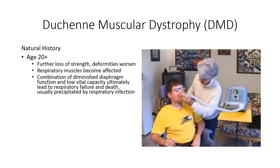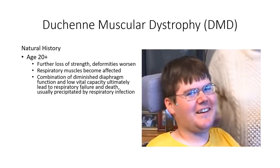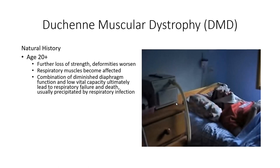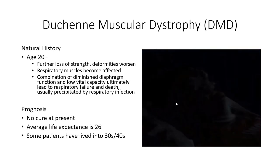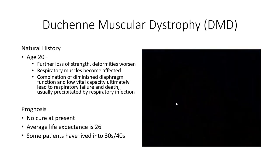Core musculature becomes increasingly affected in late adolescence, including muscles of respiration. Respiratory therapists assist with the clearing of phlegm from the respiratory tract, as coughing becomes increasingly difficult. Older patients will also be equipped with CPAP machines to assist with breathing at night. As the disease progresses towards end stage, respiratory function will continue to diminish, leading to a reduced vital capacity. The patient ultimately succumbs to respiratory failure, which is usually precipitated by some sort of respiratory infection that compromises gas exchange beyond what the patient can handle.